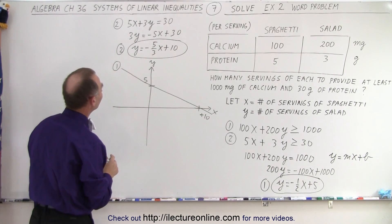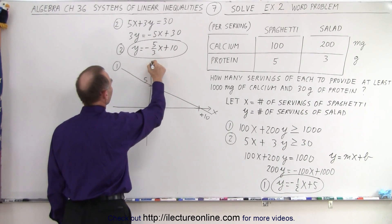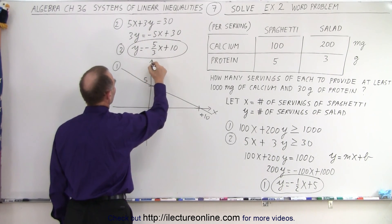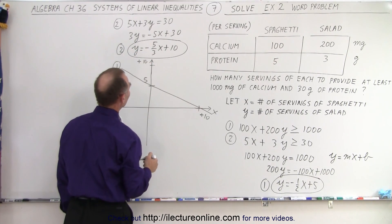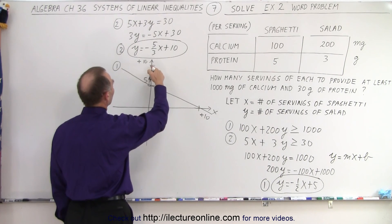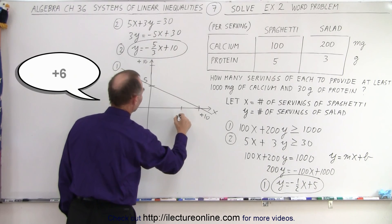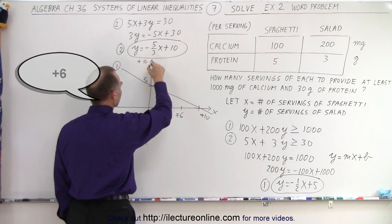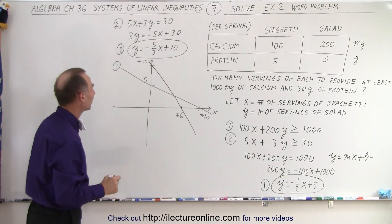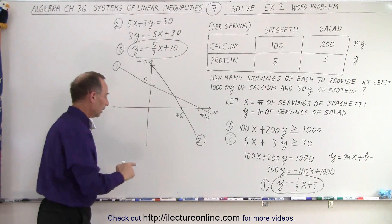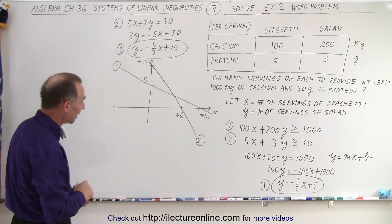Line number two: y equals negative five-thirds x plus 10. The y-intercept is 10 and the slope is steeper at negative five-thirds, meaning we go down 5 and over 3, so it hits the x-axis at 6. There's line number two. Now we're looking for the regions that satisfy both inequalities at the same time.